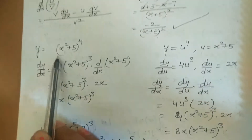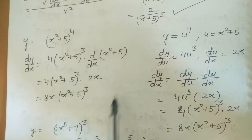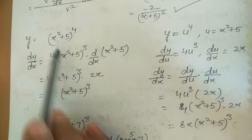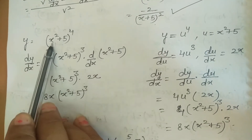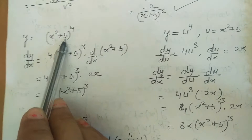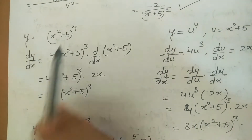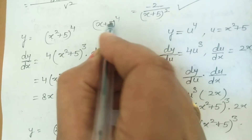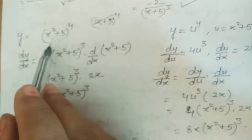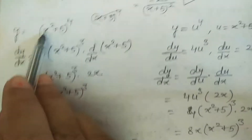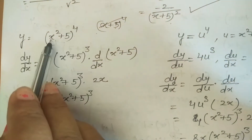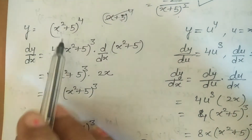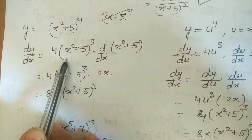Now we use chain rule. For example, x²+5 raised to power 4. We cannot use (ax+b)^n here because the inner function is x²+5, not linear. For such questions we apply the chain rule.